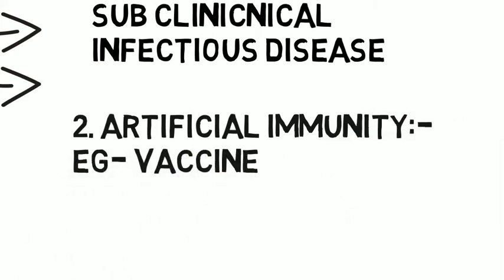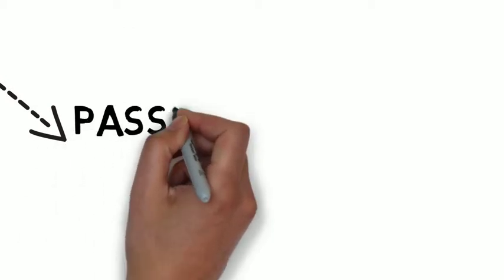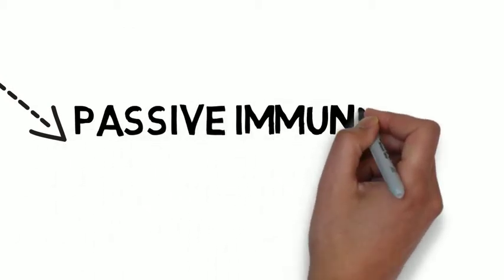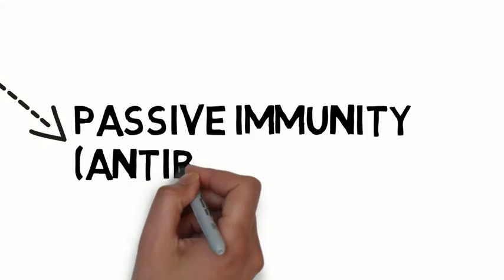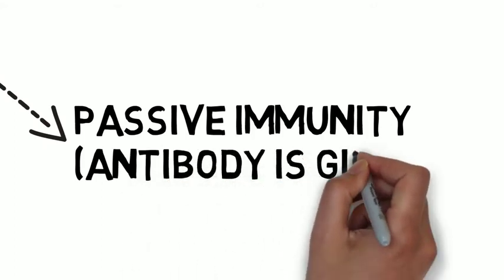The second one is passive immunity. Passive acquired immunity means antibodies are given. Antibodies given.